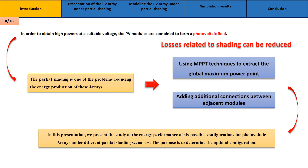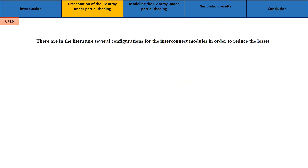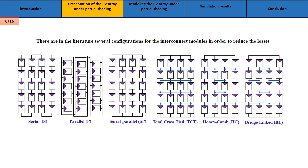For these reasons, in this presentation we study the energy performance of six possible configurations for photovoltaic arrays under different partial shading scenarios. The purpose is to determine the optimal configuration. There are in the literature several configurations for interconnecting modules in order to reduce losses, as shown in this figure.